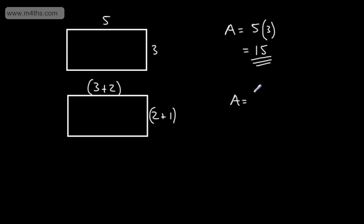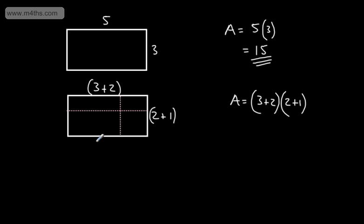The area is the length (3 plus 2) multiplied by the width (2 plus 1). Drawing dividing lines, we get four sub-rectangles: 2 times 3 is 6, 2 times 2 is 4, 1 times 3 is 3, and 1 times 2 is 2.